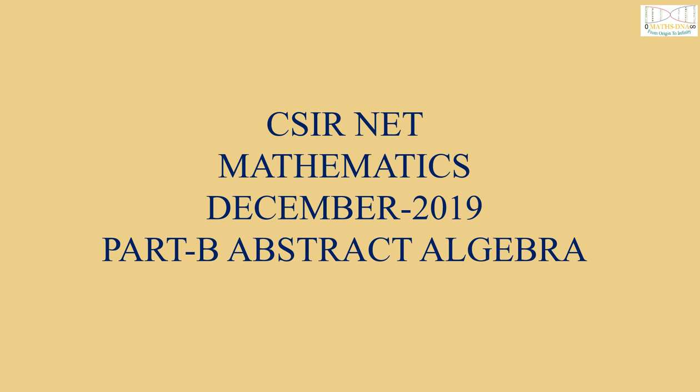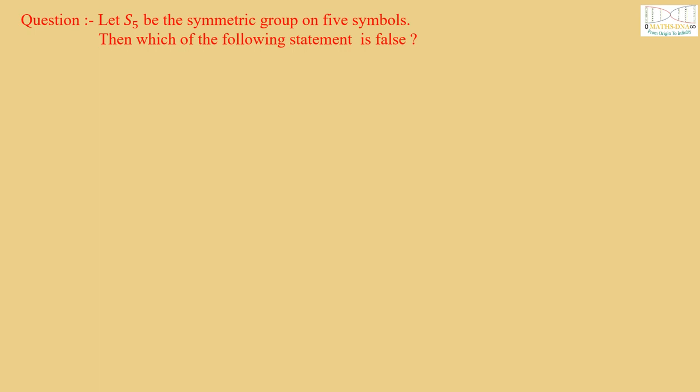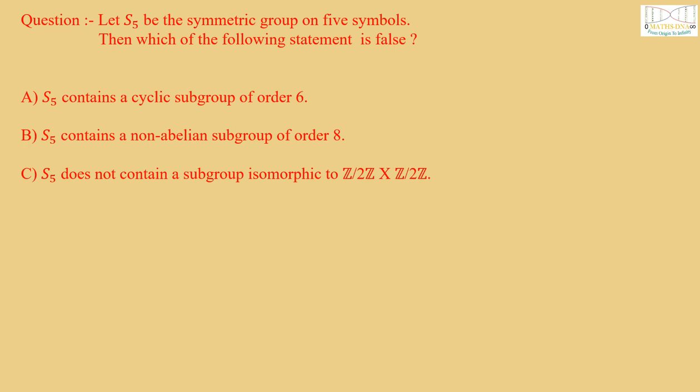Part B, Abstract Algebra. The question is: Let S5 be the symmetric group on five symbols. Then which of the following statement is false? The options are: A) S5 contains a cyclic subgroup of order 6. B) S5 contains a non-abelian subgroup of order 8. C) S5 does not contain a subgroup isomorphic to Z over 2Z cross Z over 2Z. And D) S5 does not contain a subgroup of order 7.